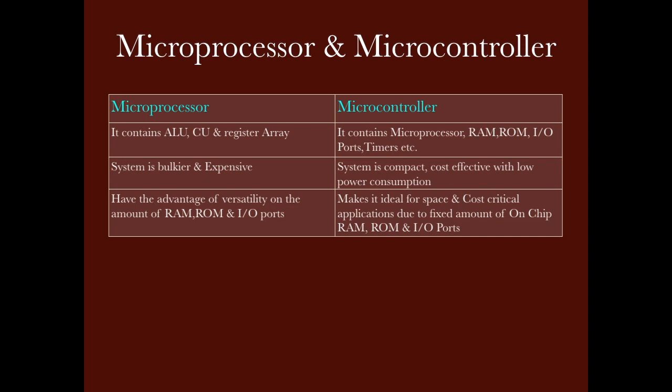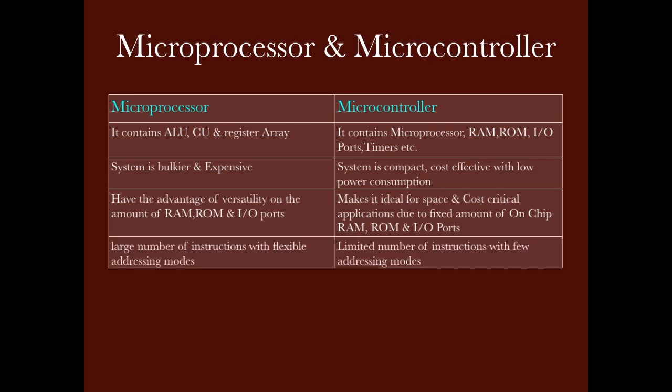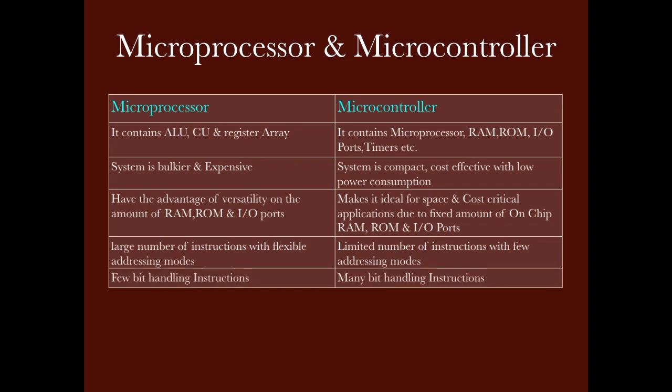We use the microcontroller in cost and space critical applications. Regarding the number of instructions, the microprocessor has a large number of instructions and its addressing modes are more flexible compared to the microcontroller, where we have a limited number of instructions and very few addressing modes. Addressing modes refer to how we address the data we operate on — such as memory addressing, register addressing, or immediate addressing modes. The number of instructions in the microprocessor is greater than in the microcontroller.